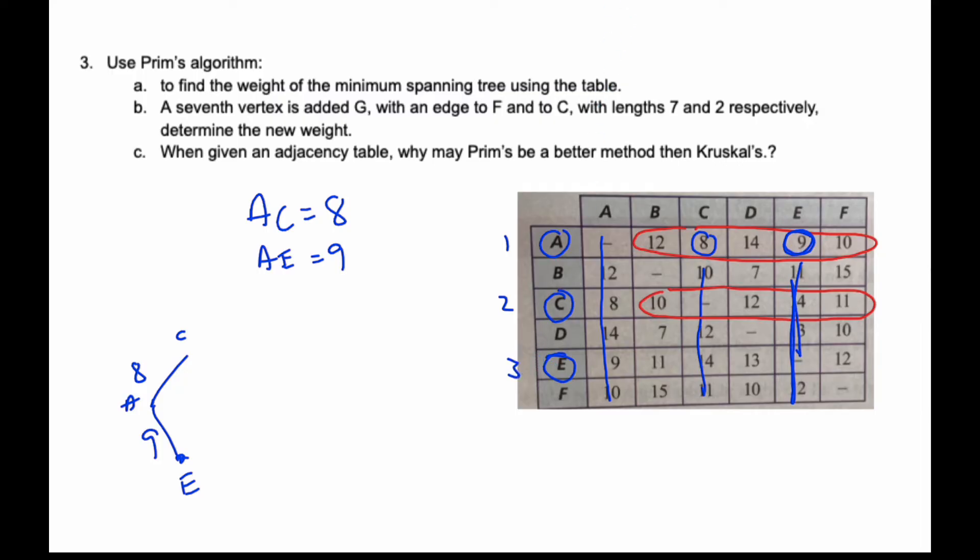Now I'm going to look at these values for E. I recognize that these ones here are no longer being looked at. These ones are all scratched out. I'm looking for the smallest one: 11, 13, 12, 10. I can see there's a 10 here and a 10 here. It doesn't matter which one I choose.